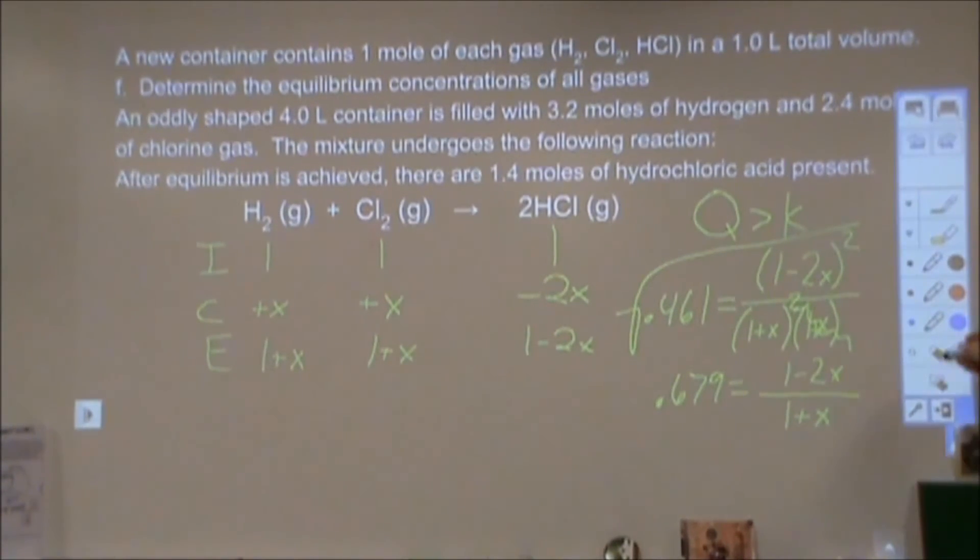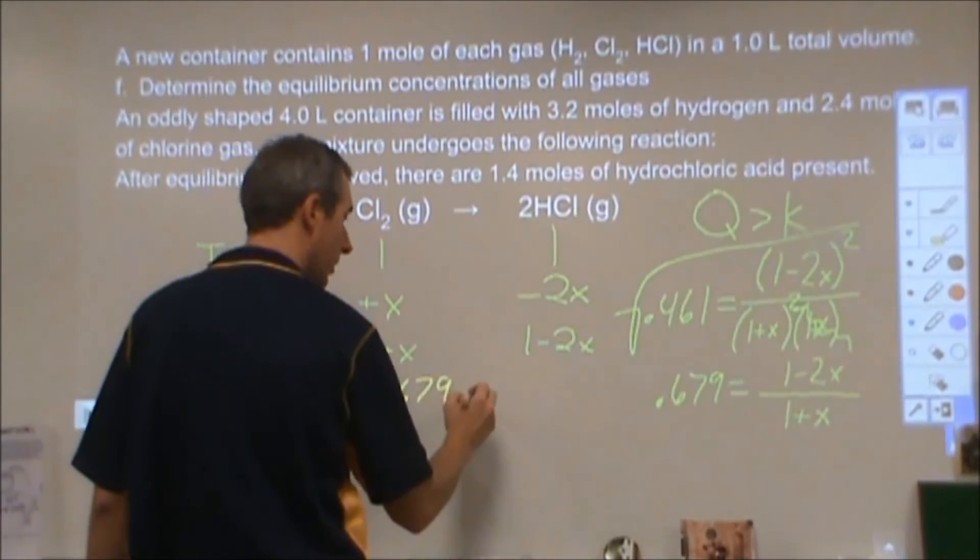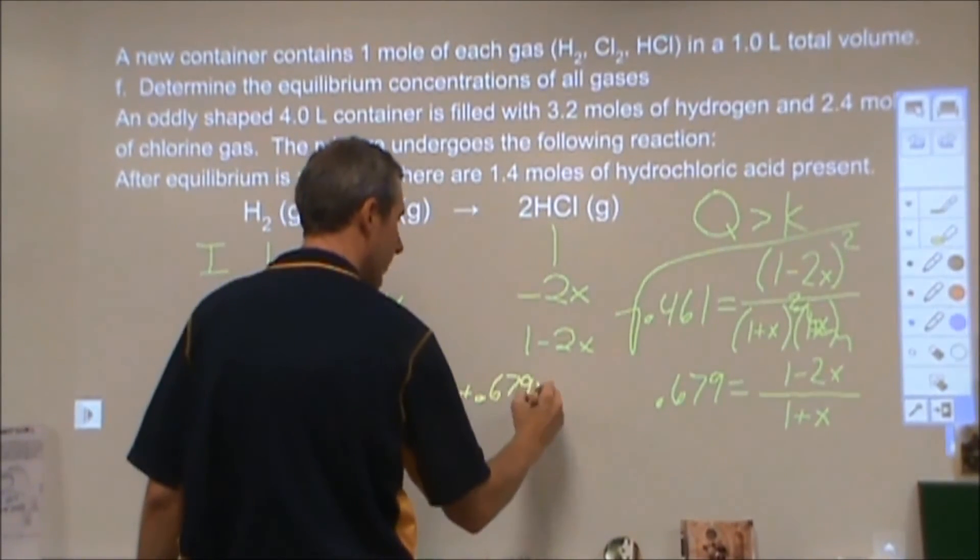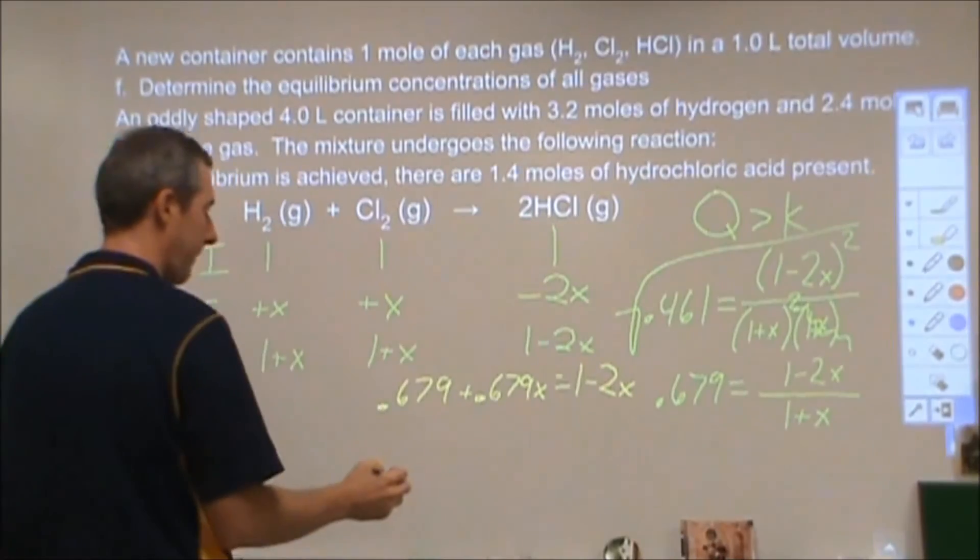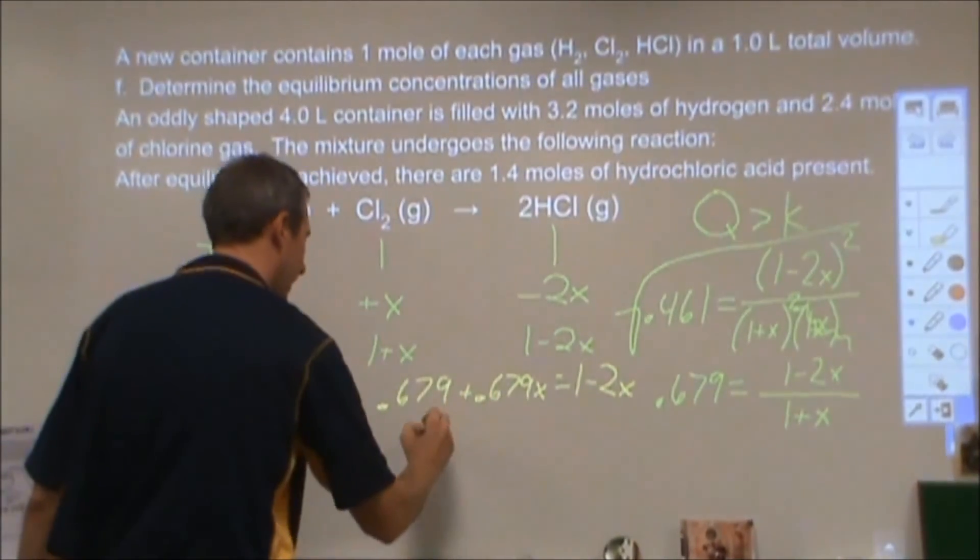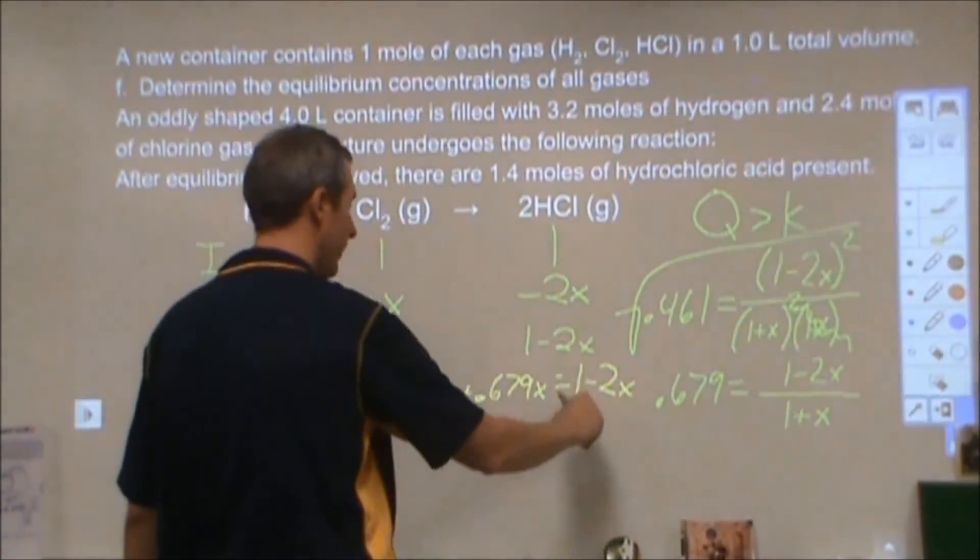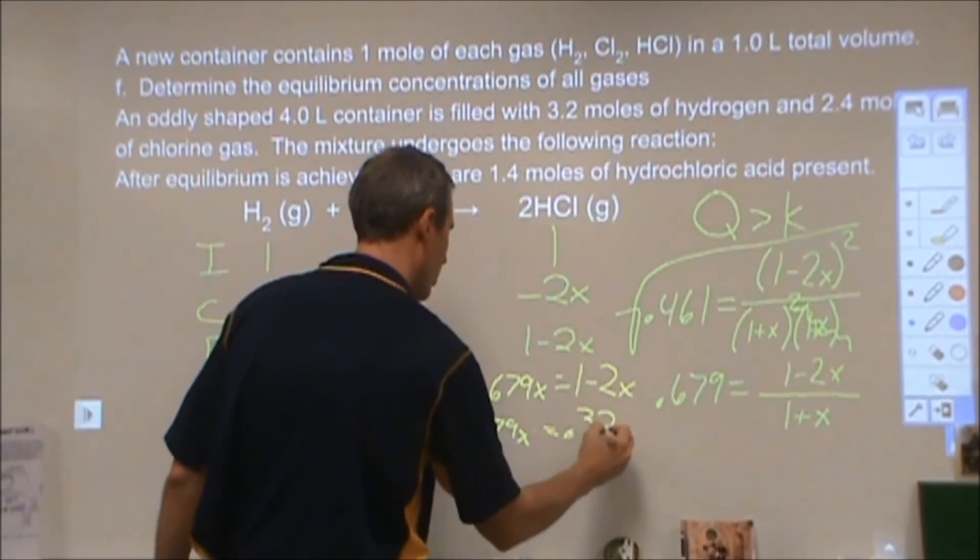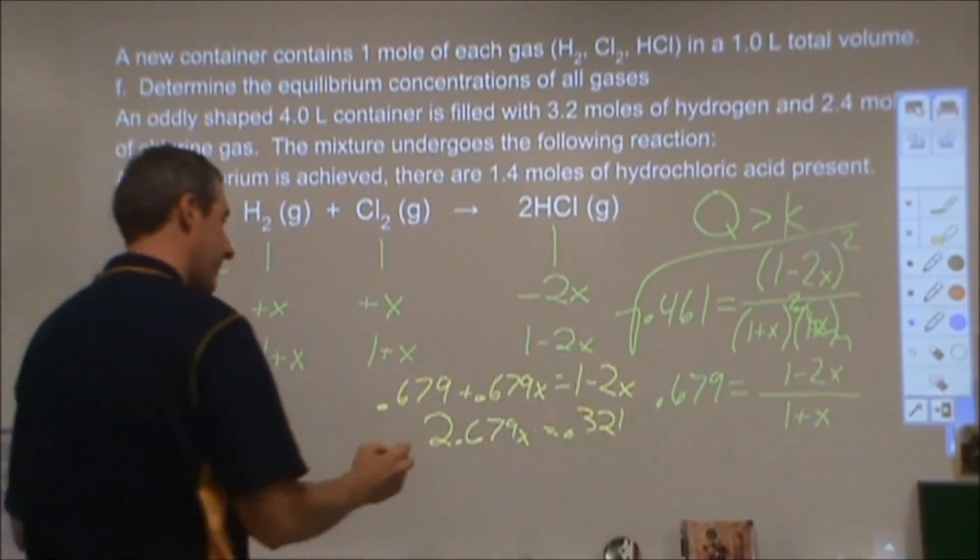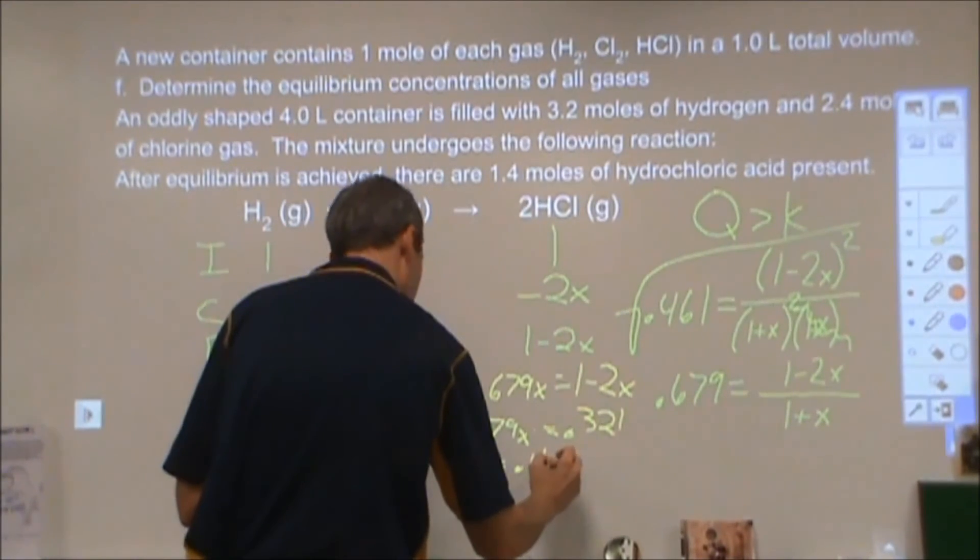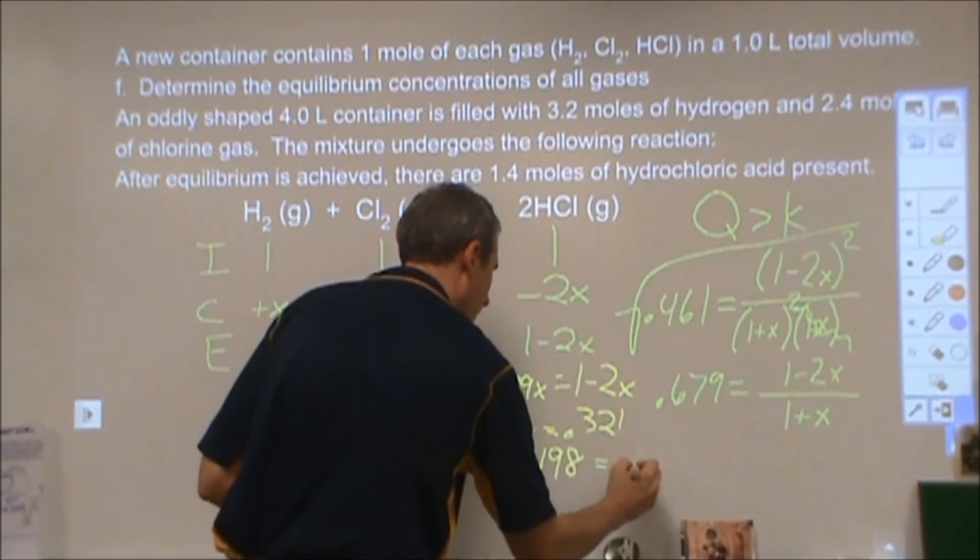And from there I want to rearrange and I want to solve for X. So I'm going to have 0.679 plus 0.679X by distributing this over here equals 1 minus 2X. And then I'm going to take my 2X over to here to get 2.679X. And I'm going to take my 0.679 over here to get 0.321. And that gives me an X of 0.1198, we'll call that 0.120.